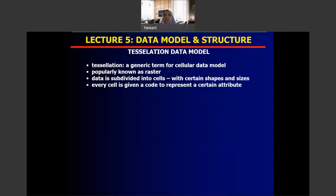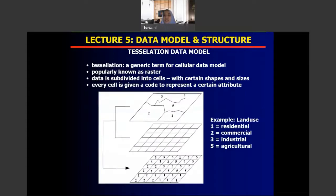Tessellation is a generic term for cellular data model, which the popular term is raster. In raster, data is divided into cells with certain shapes and size. Every cell has a value — they are coded with a value to represent a certain attribute. For example, in the raster data shown, each feature is coded according to the cells, according to the pixel, coded with a certain attribute.